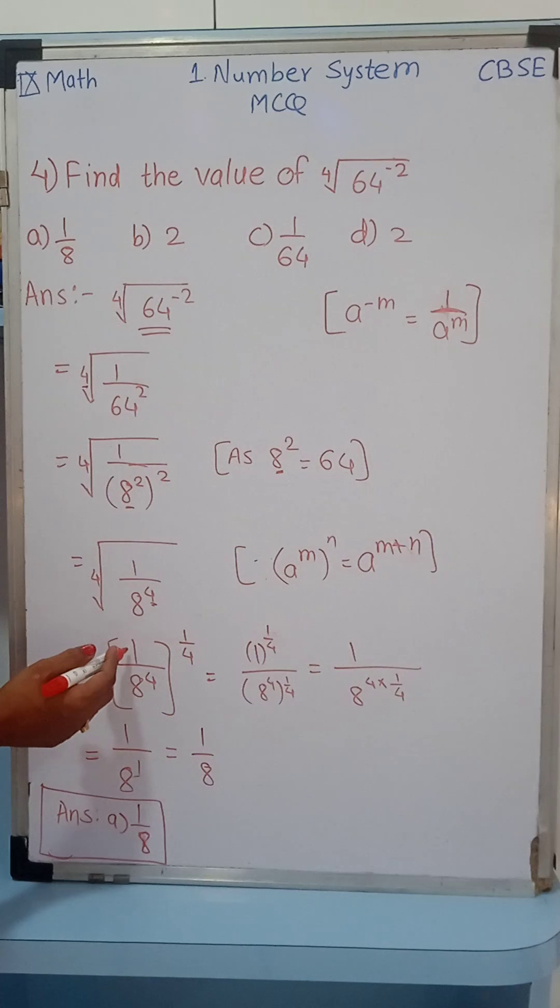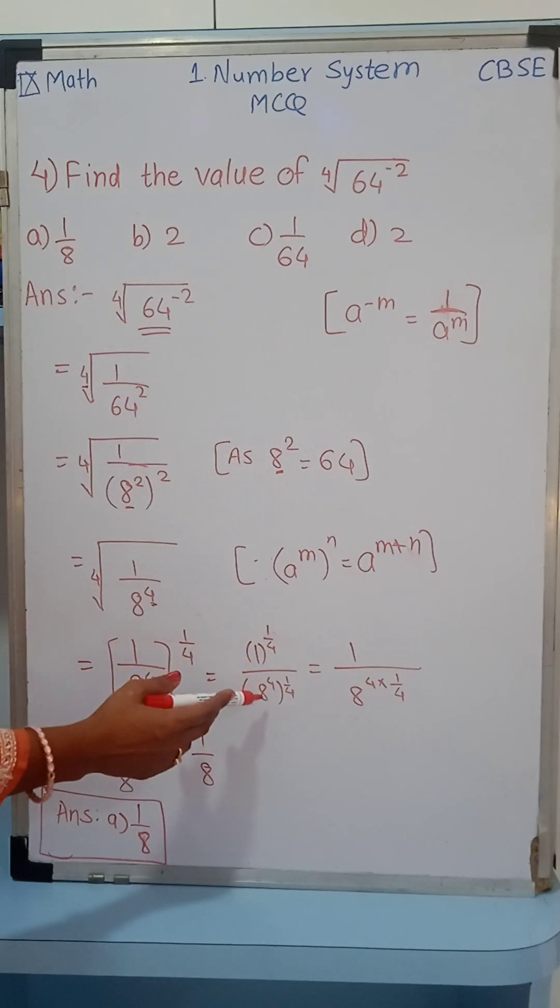Now again, this is the formula: if a over b raised to m, it will be a raised to m over b raised to m. So the power goes to the numerator and the power goes to the denominator.